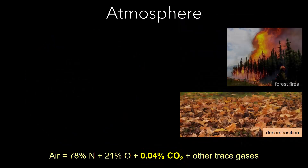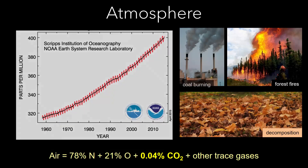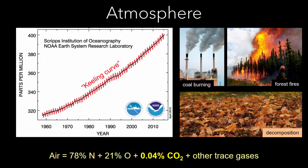Carbon dioxide naturally flows into the atmosphere as a result of the decomposition of organic materials and forest fires. The concentration of atmospheric carbon dioxide has increased as a result of the greater use of carbon-rich fossil fuels. This plot, known as the Keeling curve, records the steady increase of carbon dioxide in the atmosphere.